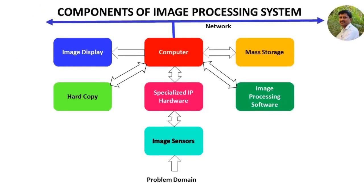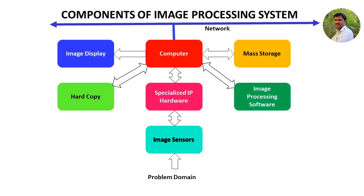The various components required for image processing may be represented in a block diagram form. You may pause this video and note down the block diagram. The various components required for digital image processing are: Image Sensors, i.e. Cameras,